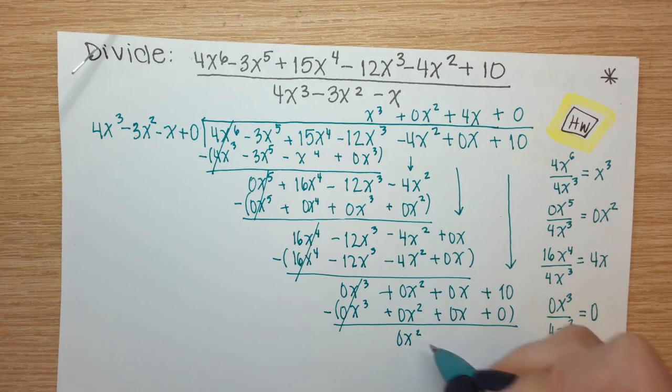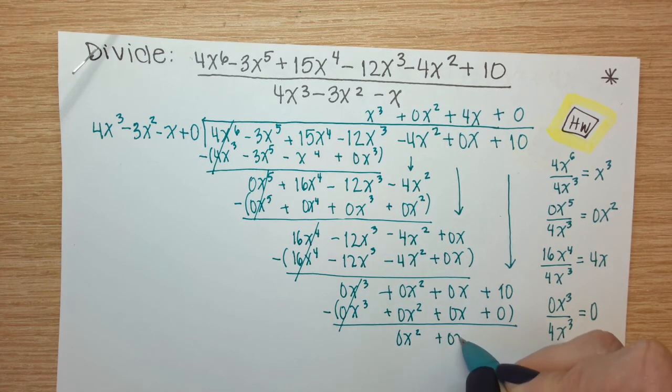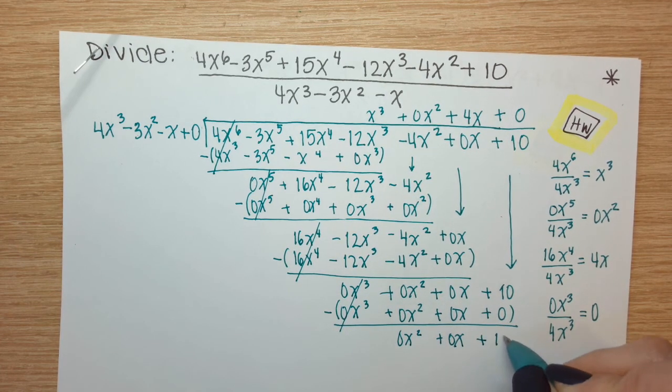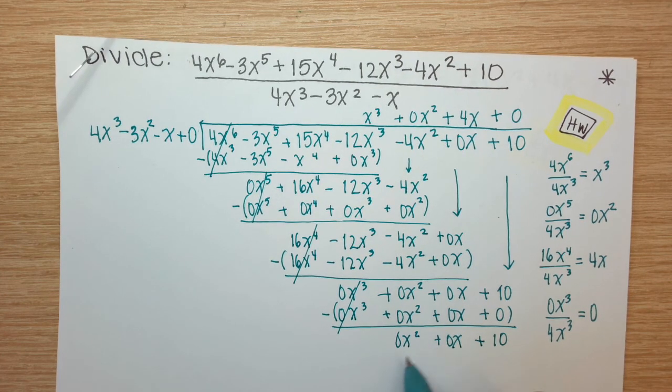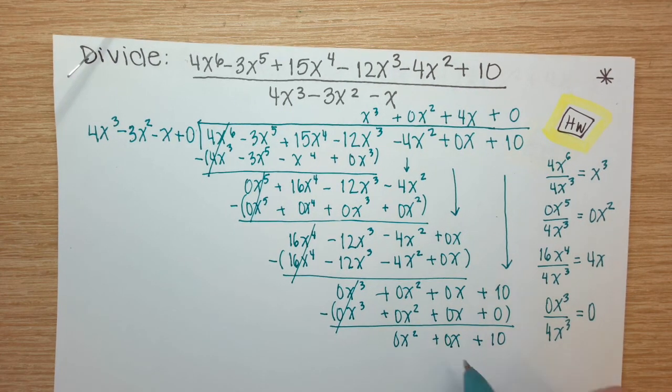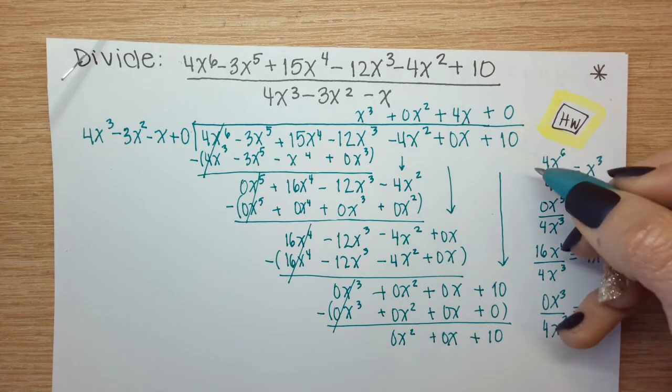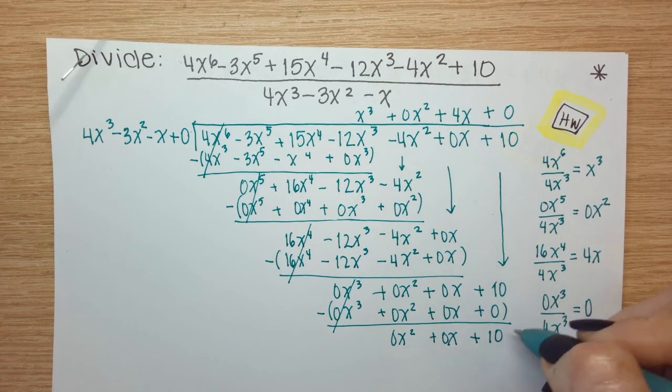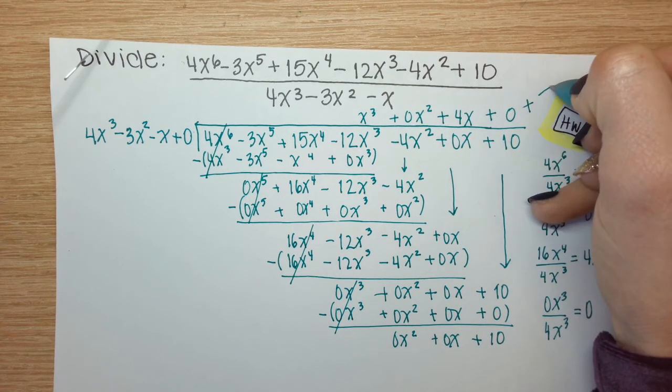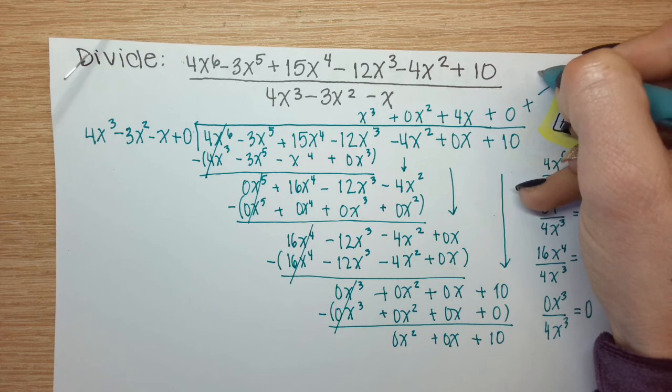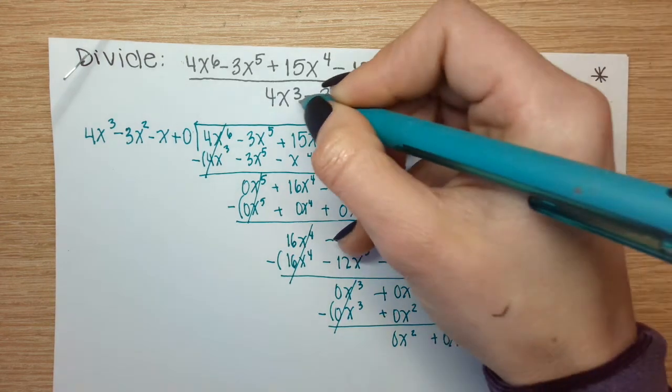We have 0x squared. We have 0x, but we have a 10. If these were not zeros, we would include whatever they might be in the numerator that we tack on to the end, but since I only have a 10 to worry about, I'll have plus 10 on top.